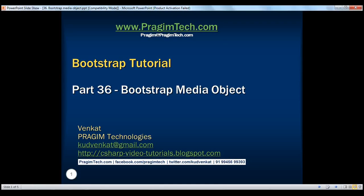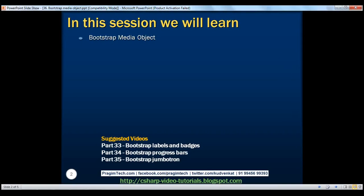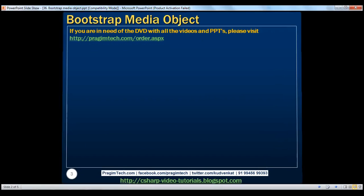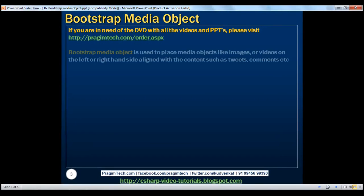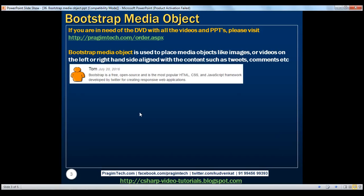This is part 36 of the Bootstrap tutorial. In this video we'll discuss the Bootstrap media object. Bootstrap media object is used to place media objects like images or videos on the left or right hand side, aligned with the content such as tweets, comments, etc. Let's see how to display something like this using the Bootstrap media object.